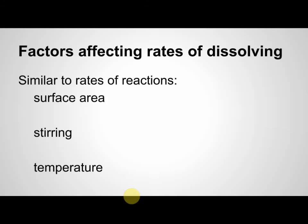The factors that are going to affect the rates of dissolving — this is important to talk about briefly. It's very similar to the things that can change the rate of reaction. The rates of dissolving can be affected by surface area; the more surface area, the easier things will dissolve. Stirring will also increase the rate of dissolving, as well as temperature — increasing the heat will make things dissolve faster.